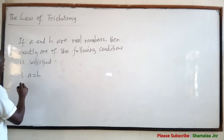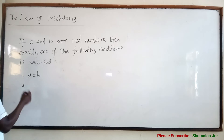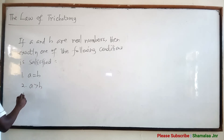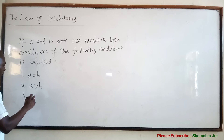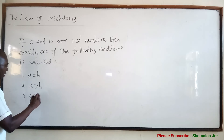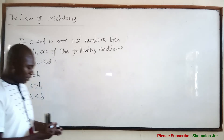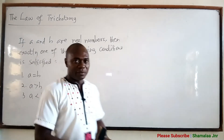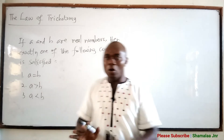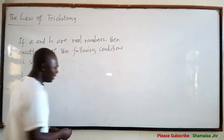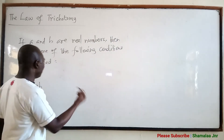The second condition: A is greater than B. And the third condition: A is less than B. This is the law of trichotomy. Let's look at this.